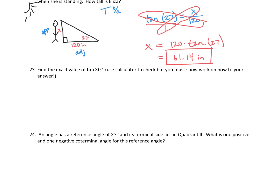Number 30: find the exact value of tangent of 30 degrees — use a calculator check, but you must show work. When we had problems like this, we draw a 30 degree angle right into a coordinate plane. 30 degrees from our initial side is about here. Then we connect that to the x-axis to work with a right triangle. This is a 30-60-90 special right triangle.